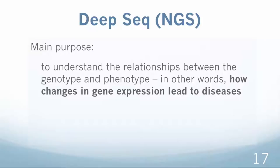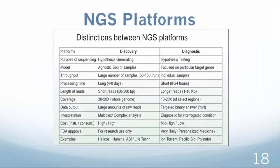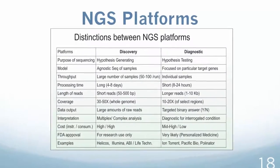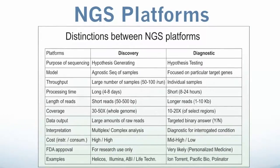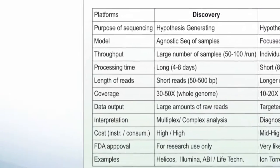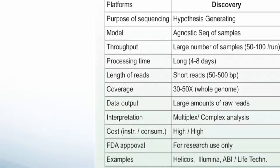The main purpose of the deep sequencing is to generate knowledge that would help us understand the relationships between the genotype and phenotype. Such knowledge would be used to develop new treatment strategies or to adjust the existing ones. The existing NGS platforms may be subdivided into discovery and diagnostic types. While the division is conventional, the platforms differ significantly in their purposes, experimental tasks and obtained information.